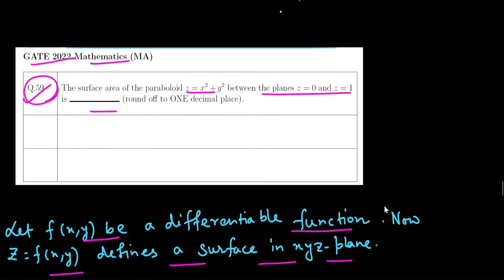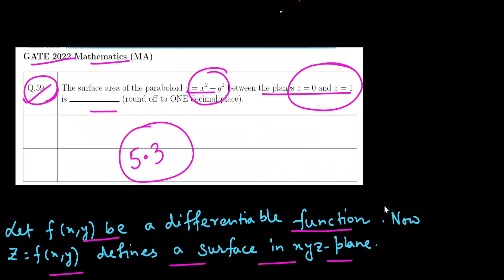So the surface area of the paraboloid z = x² + y² between the planes z = 0 and z = 1 is approximately 5.3, or more precisely around 5.33 or 5.34. You can verify that — this is the correct answer for this problem.